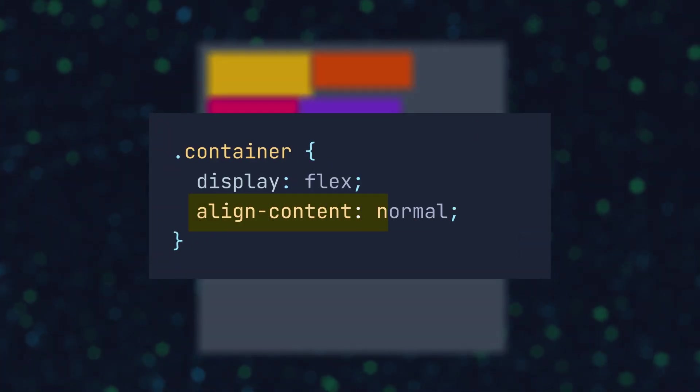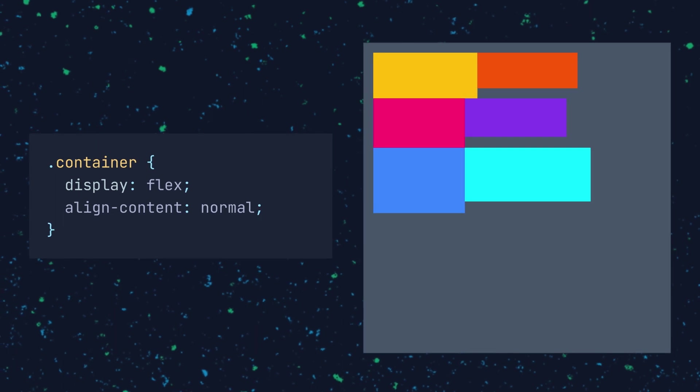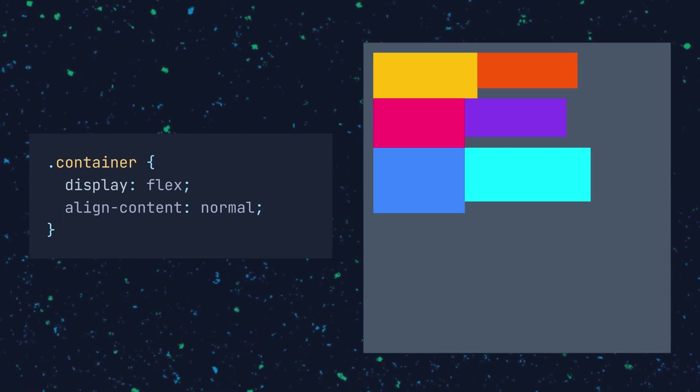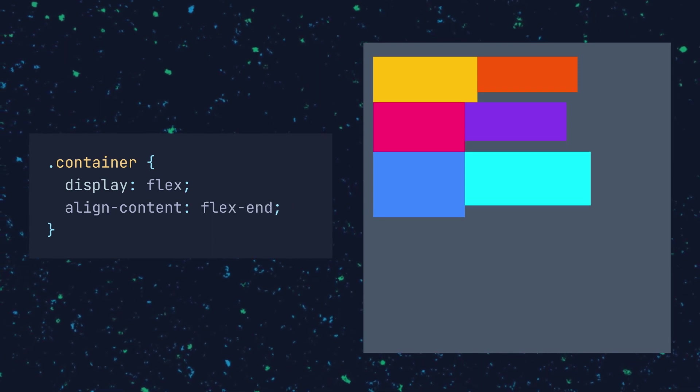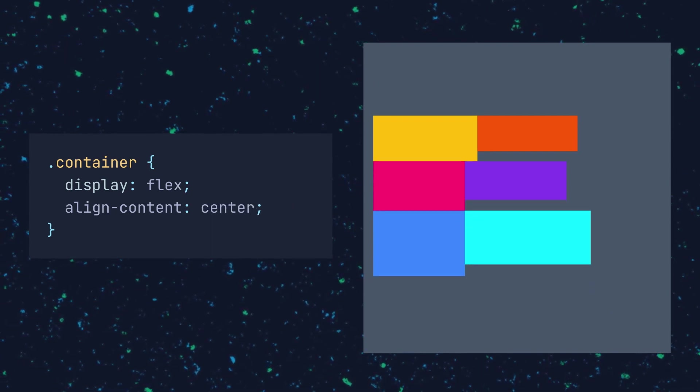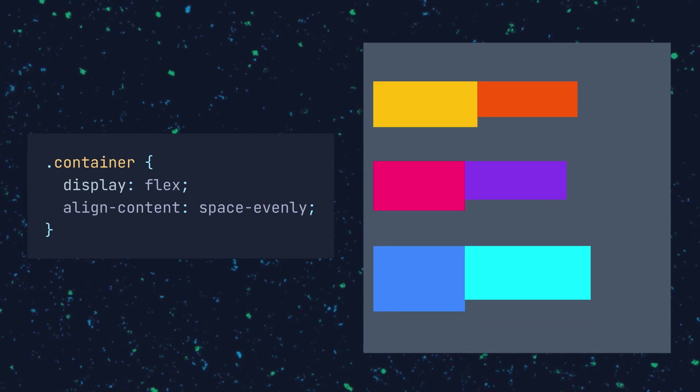We needed to cover flex-wrap before the final alignment property because this property only matters if you have flex items that wrap onto multiple rows. The final alignment property you need to know is align-content. A flex container's default align-content value is normal, meaning the items are packed into their default position. To override this, you have options including flex-start, flex-end, center, stretch, space-between, space-around, and space-evenly.